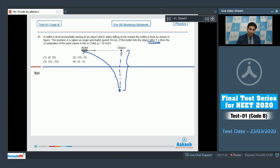Then this distance can be calculated as the distance traveled in one second in freefall which will be equal to half into g into t square where t is one. This will be equal to five meters.